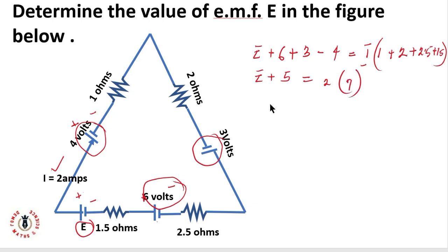So E plus 5 equals 14. E equals 14 minus 5, which equals 9 volts. E is equals to 9 volts.